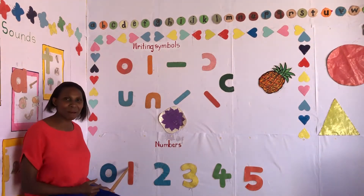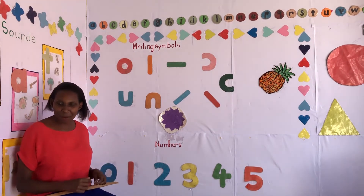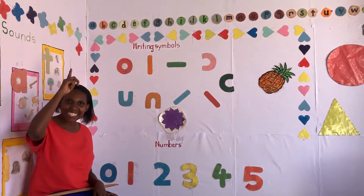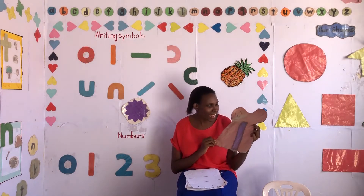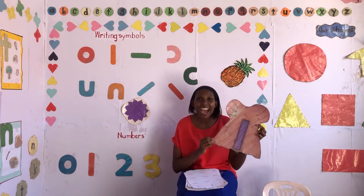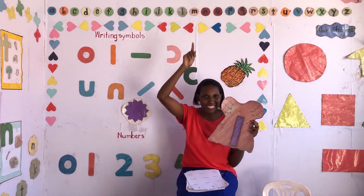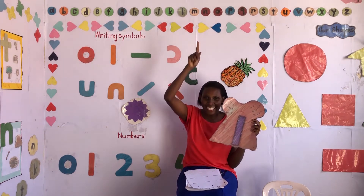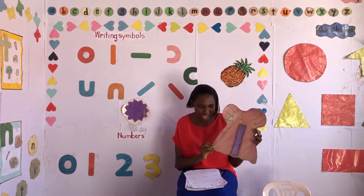I hope you've learned number one. And how do you write number one? A standing stick straight — a standing stick straight. Here is my number one, a standing stick straight. How do you write number one? A standing stick straight. Let us write it in the air: a standing stick straight, number one. Write it again — a standing stick straight. Number one, number one.